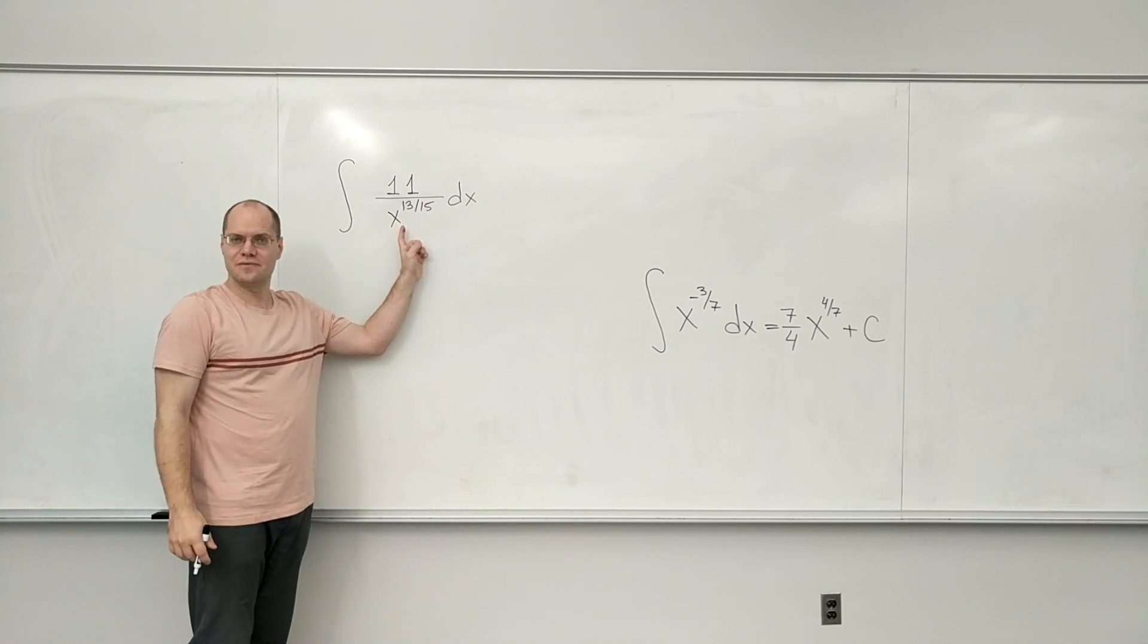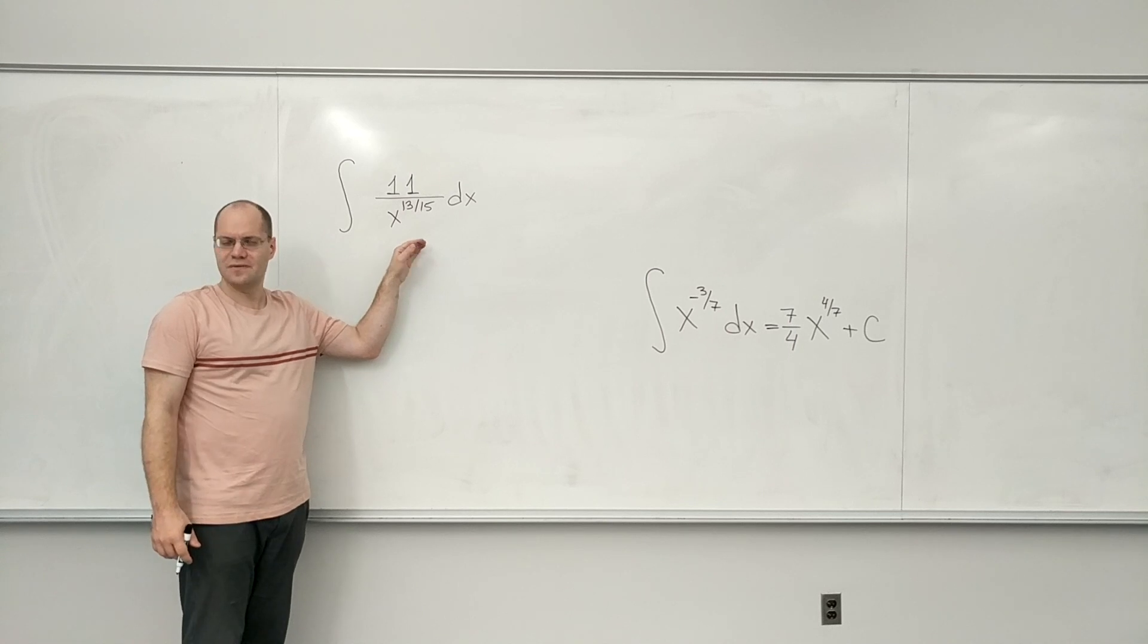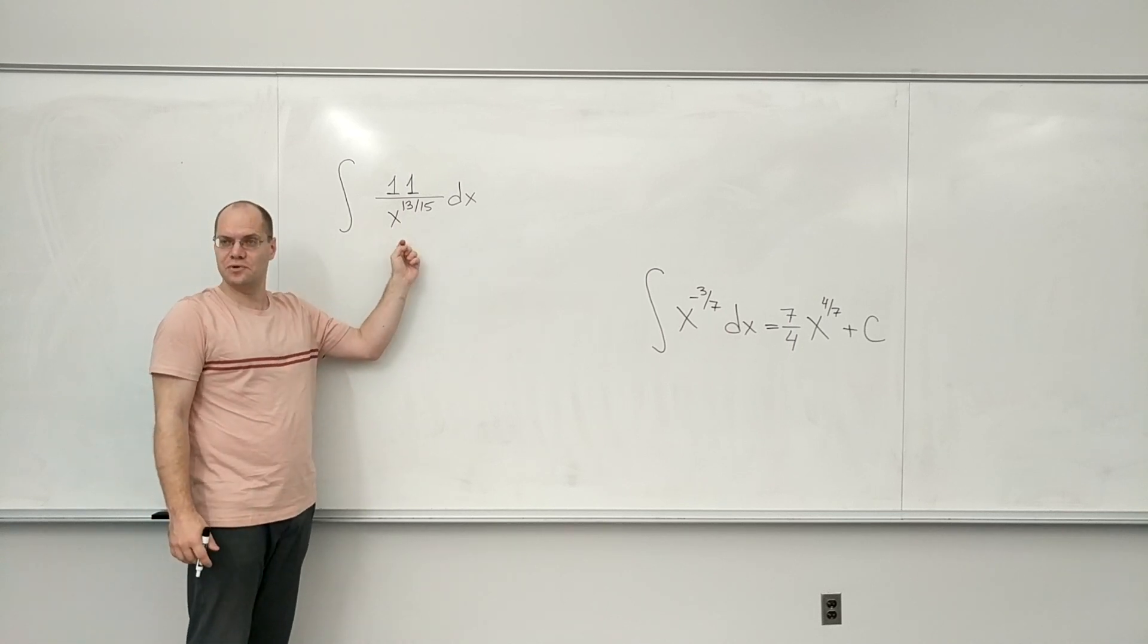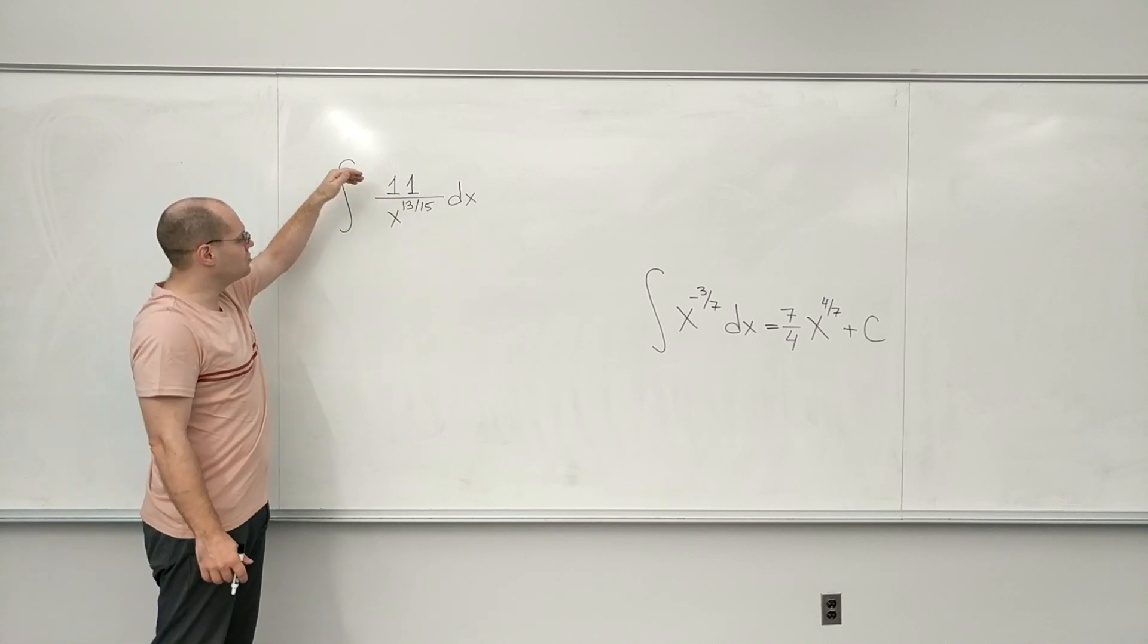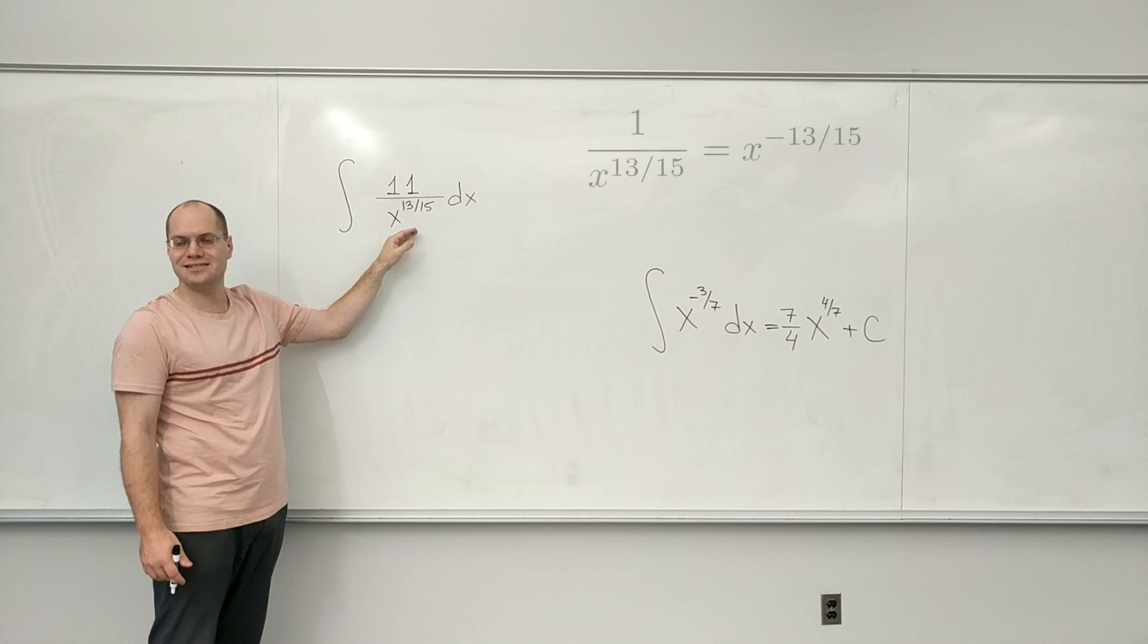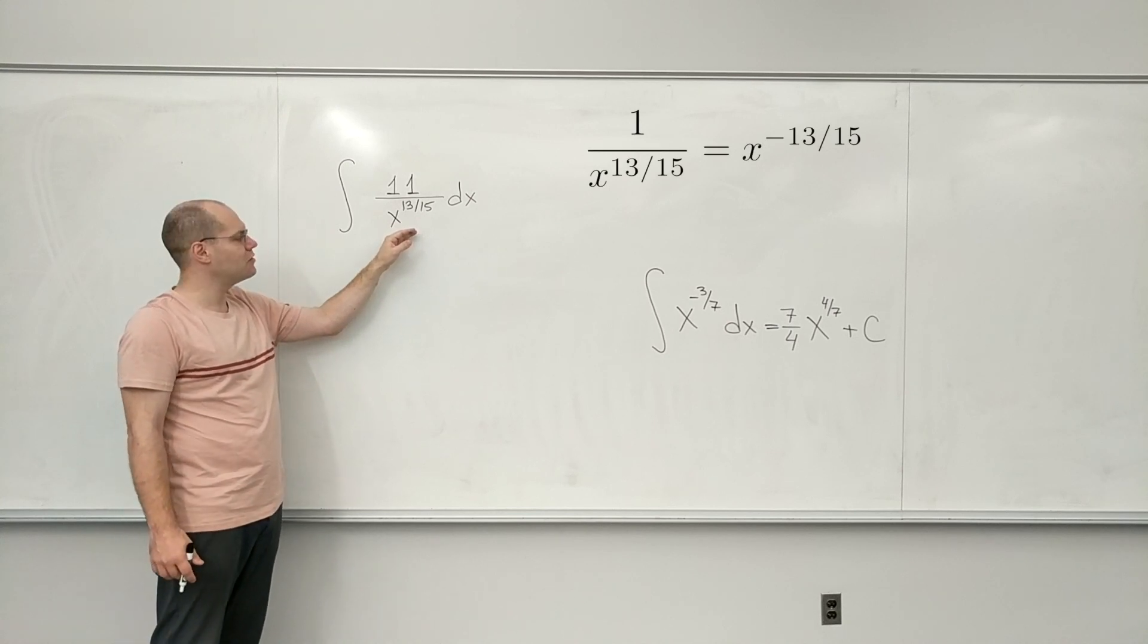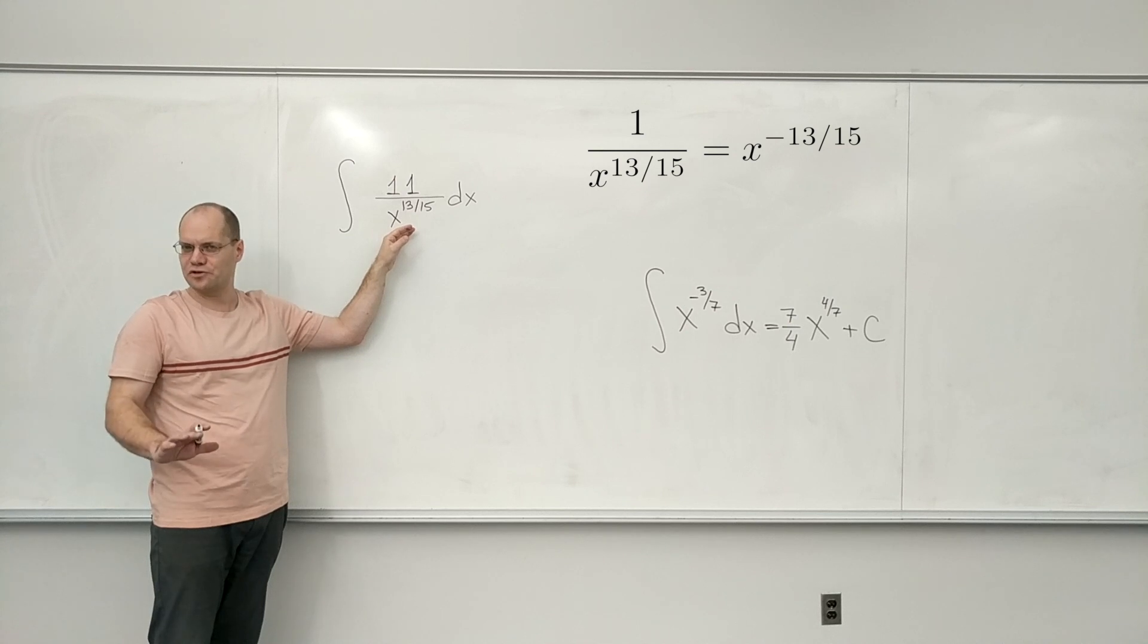I will imagine this with X not in the denominator. That's hard to deal with, with X in the denominator. I will in my mind convert this to X to a negative power. So in my mind, I will say that this is X to the power of minus 13/15. I won't write this down. It's not worth writing down.